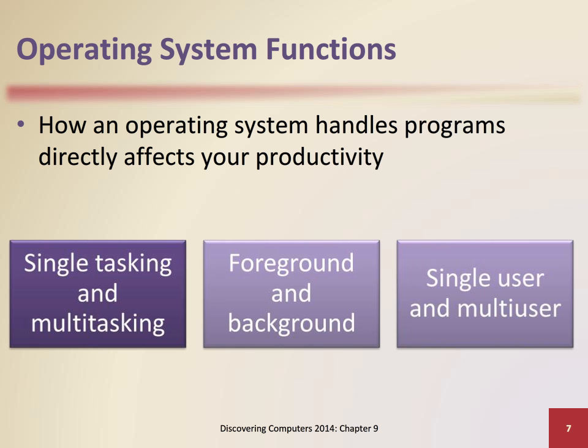How an operating system handles programs directly affects your productivity. Multitasking is working on two or more programs that reside in memory at the same time. In the foreground is the program you are currently using; in the background are the programs that are running but you are not currently using.